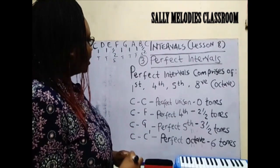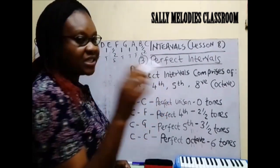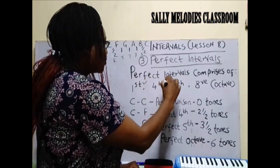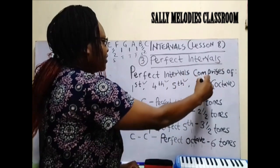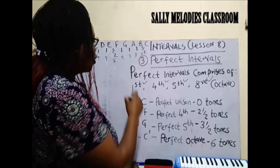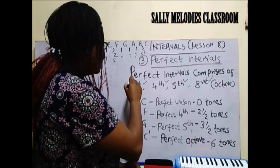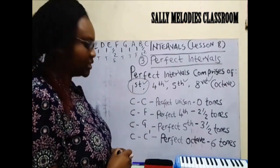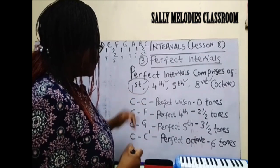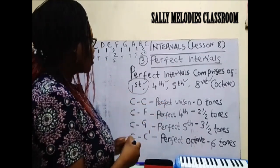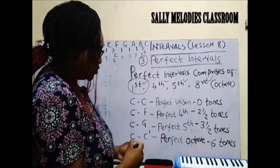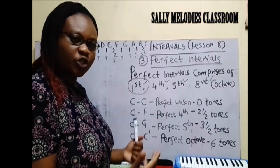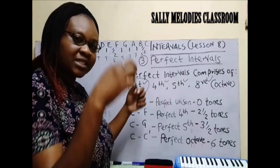Now let's start. First and foremost, we said perfect intervals comprises of the first, fourth, fifth, and octave. We might ask ourselves: what is this interval called the first? It is called perfect unison. You are not moving from any note to any note — you just stay on that note.